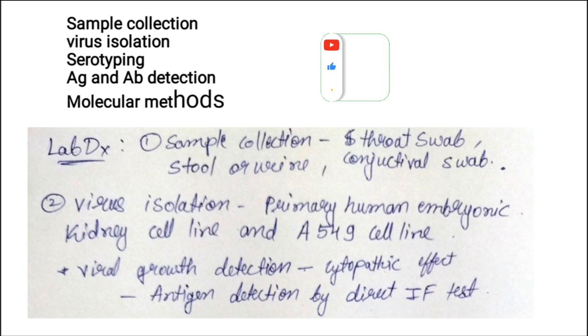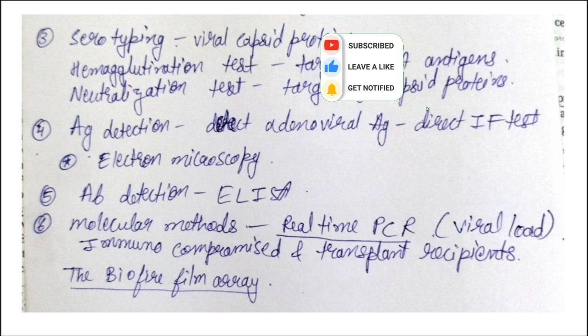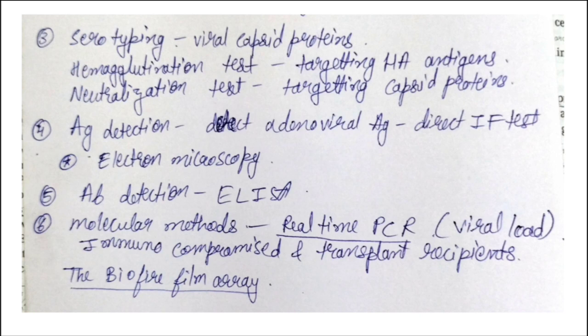Serotyping is performed using viral capsid proteins via hemagglutination test — targeting HA antigens — and neutralization test targeting capsid proteins. Antigen detection uses the direct immunofluorescence test; electron microscopy can also be used to visualize the space-vehicle-shaped appearance. Antibody detection is by ELISA (enzyme-linked immunosorbent assay).